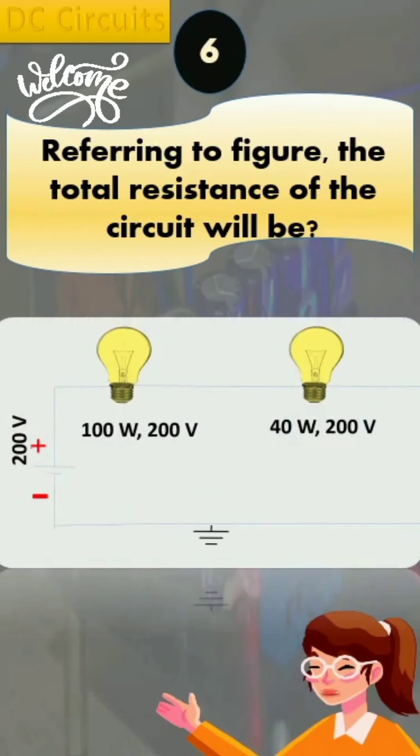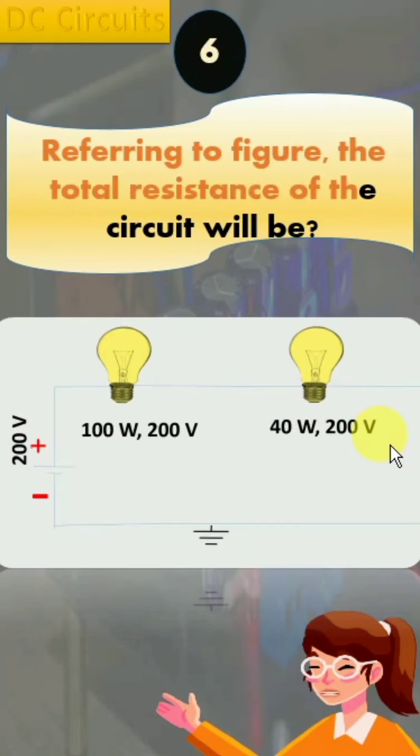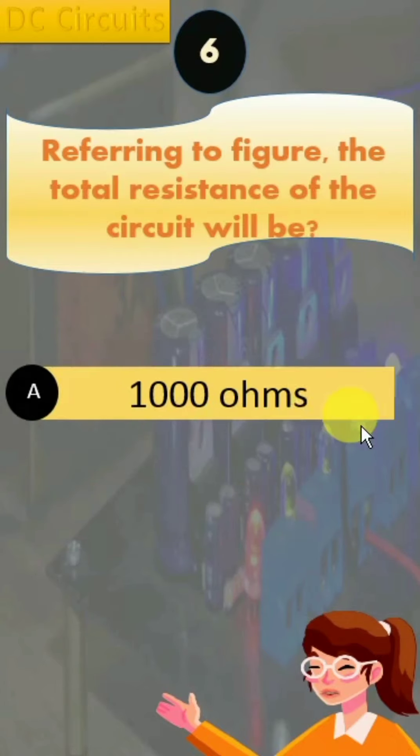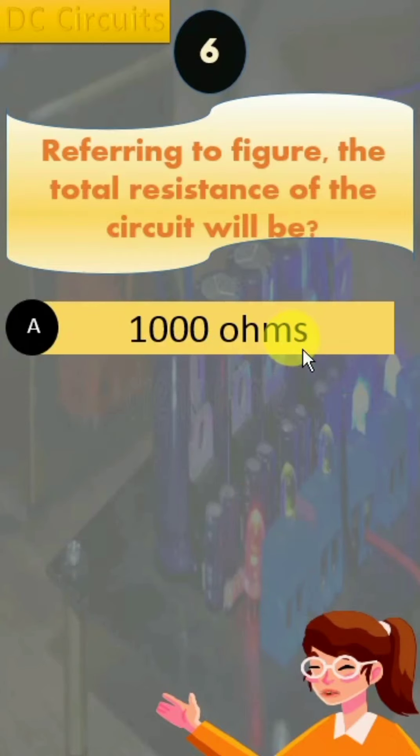In DC circuit question number six, we have been given a figure and two bulbs are connected in series. The question is: referring to figure, the total resistance of the circuit will be? Options are option A, 1000 ohms.